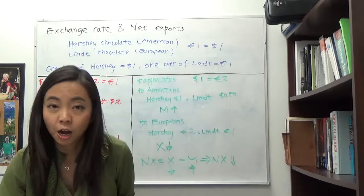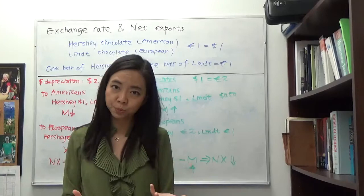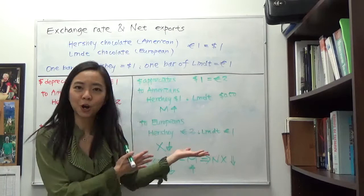Now the other way around: suppose the dollar appreciates. That means the dollar becomes more valuable, and therefore for each dollar you can get more euros. So what happens to our chocolate business?